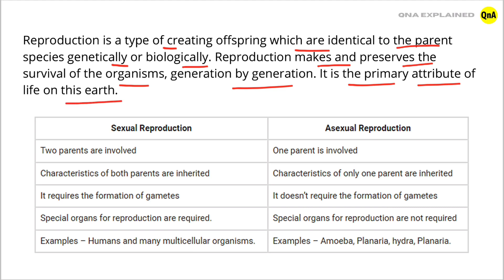In sexual reproduction, two parents are involved. While in asexual reproduction, one parent is involved.